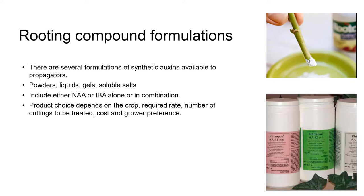There are several formulations of synthetic auxins available to propagators: powders, alcohol-based liquids, gels, and soluble salts that are dissolved in water. Depending on the brand, these rooting compounds include either NAA or IBA, alone or in combination. Which rooting compound we choose depends on the crop we're working with, the required auxin strength to promote production of adventitious roots, the number of cuttings to be treated, cost, and personal preference.